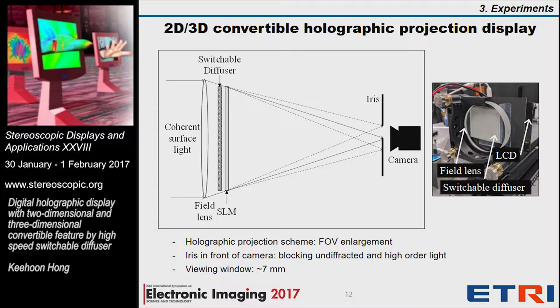The holographic projection configuration is adopted in the test-bed system. The reflected light from the SLM is converged to the viewing window by the lens function of the field lens. The switchable diffuser is located between these two components. The SLM LCD has a pixelated structure, producing undiffracted light and high-order diffracted light, which are kinds of noise in the holographic display. We place an iris aperture in front of the camera to filter out those noises.